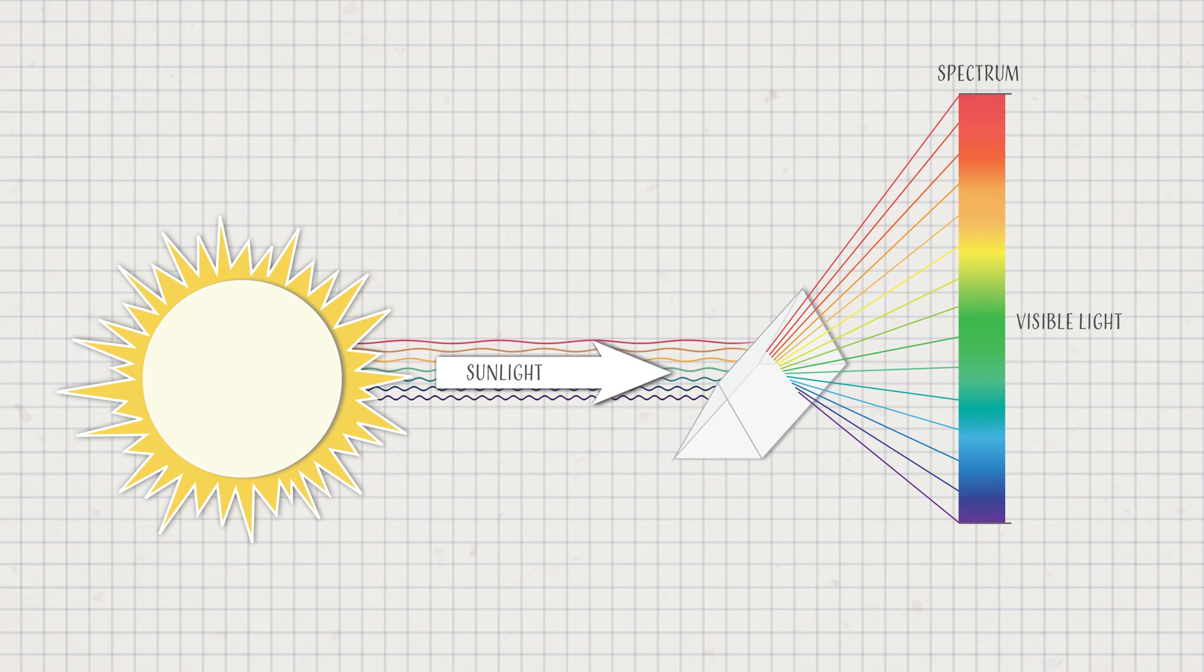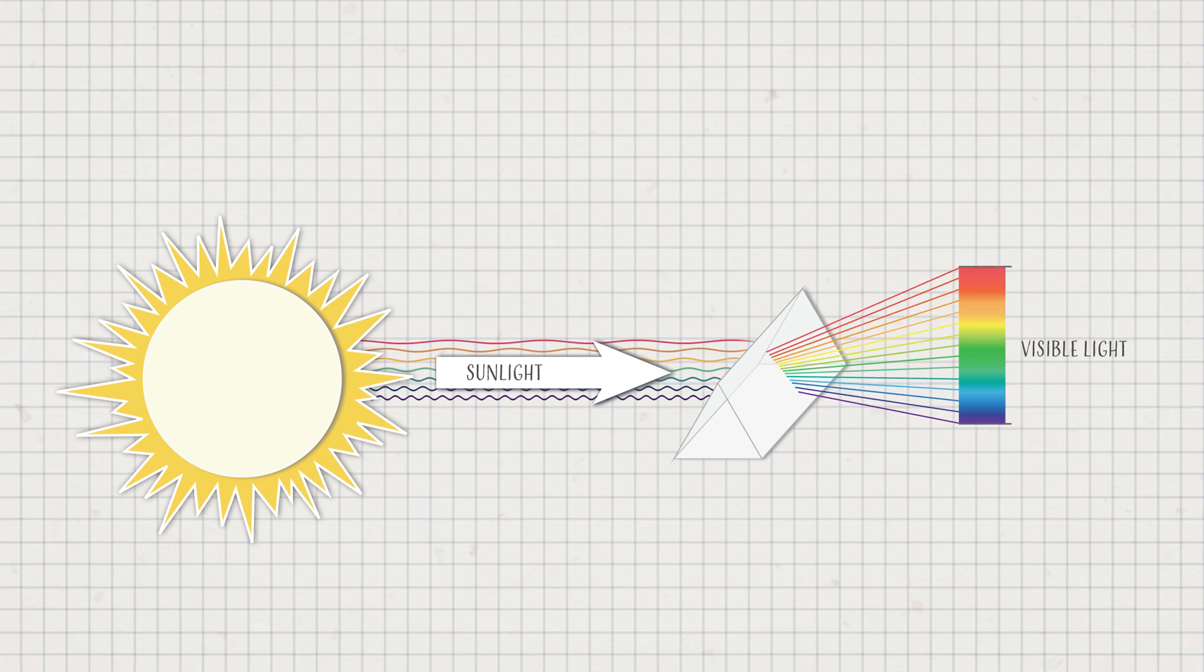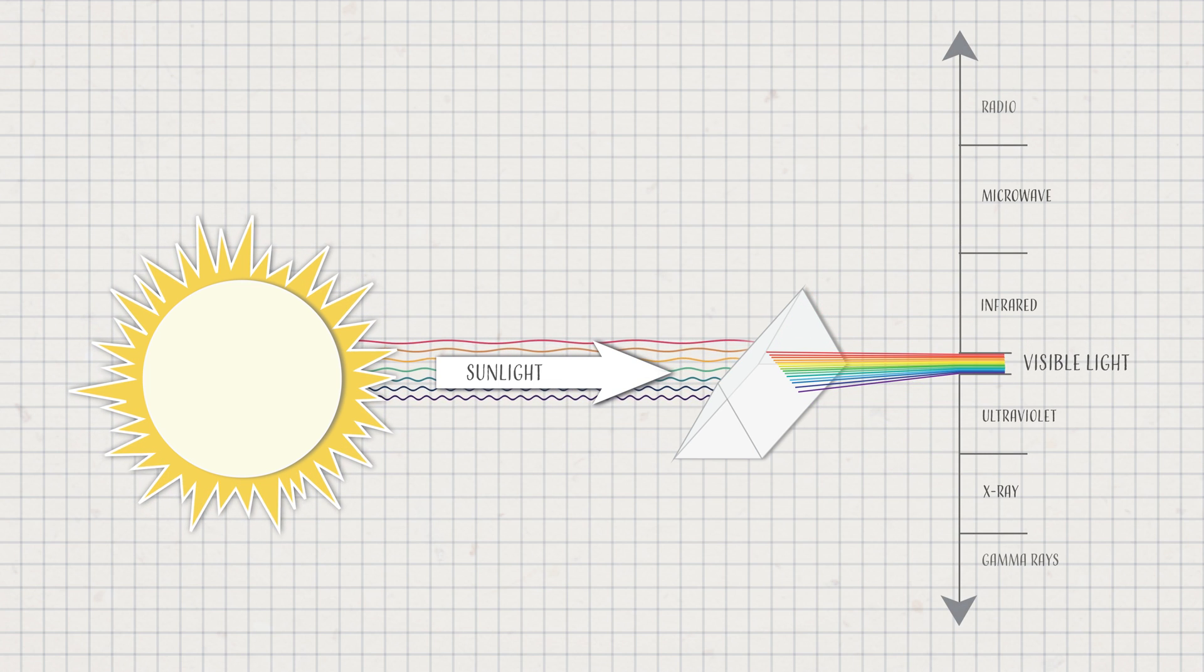Visible light appears to our eyes as the colors of the rainbow. But beyond visible light, there are many wavelengths we cannot see.